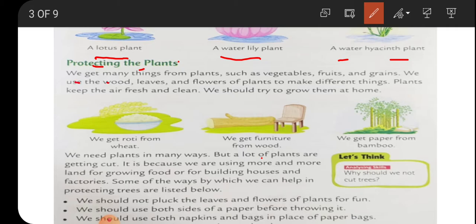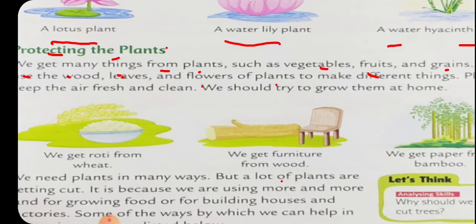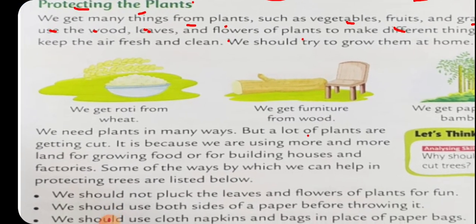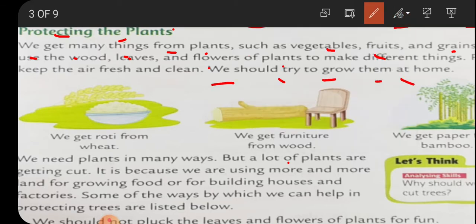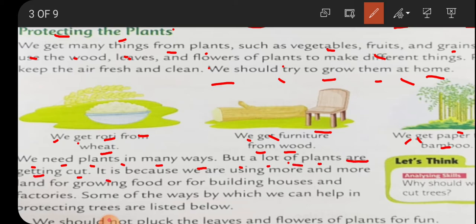Protecting the plants: we get many things from plants such as vegetables, fruits, and grains. We use the leaves and flowers of plants to make different things. Plants keep the air fresh and clean, so we should try to grow them at home. We get roti from wheat, furniture from wood, and paper from bamboo. A lot of plants are getting cut because we are using more and more land.